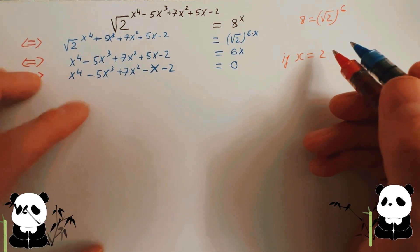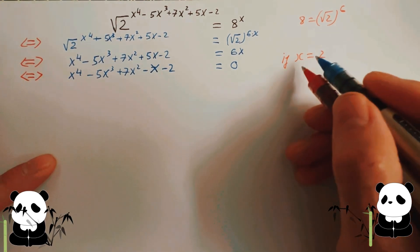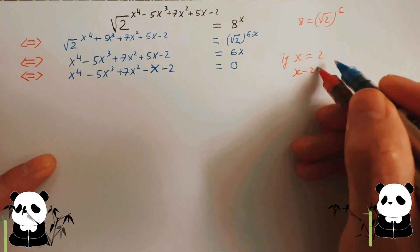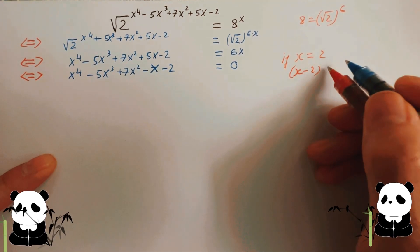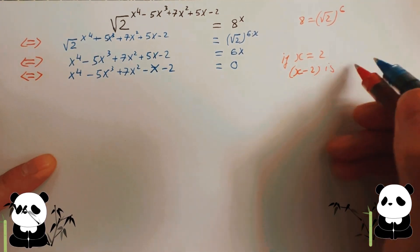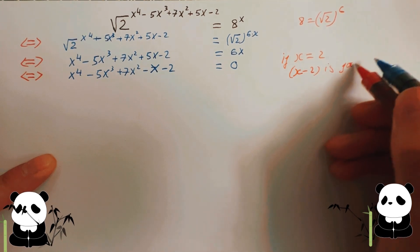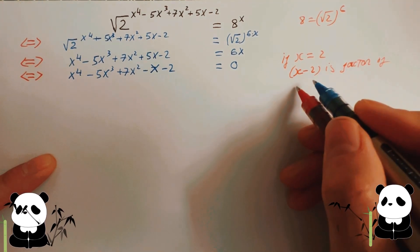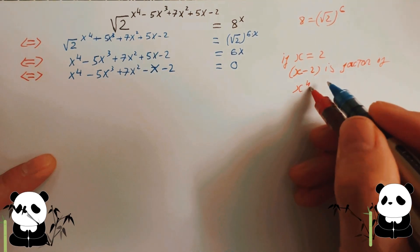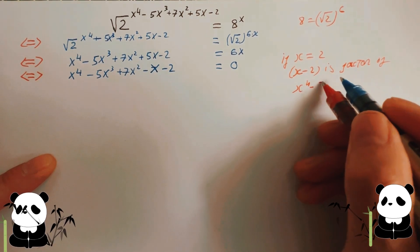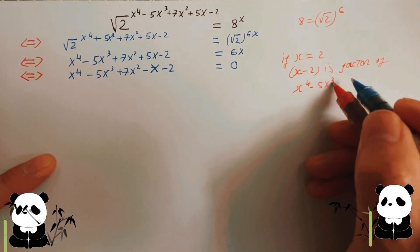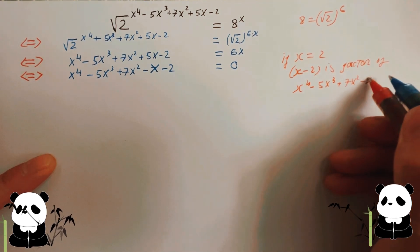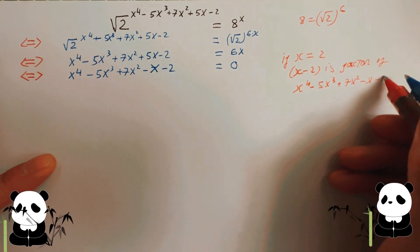So x equals two is a solution of the equation. That means you can rewrite x take away by two as a factor of the function x to the four, take away by five x cubed, plus seven x squared, take away by x, and take away by two.